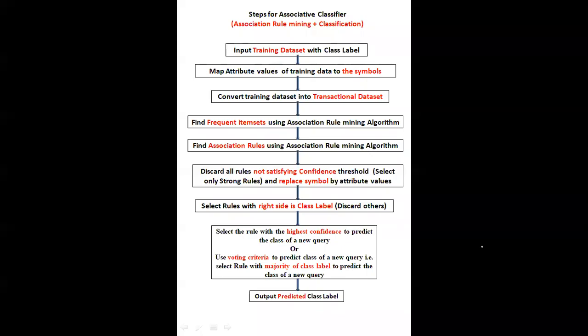Hello everyone. In this session, I will cover associative classifier. As its name indicates, it is one of the classification techniques, but it is a combination of association rule mining and classification technique. It is a hybrid approach made up from the rules of association rule mining and classification. So how it works — with an example and with steps — we will discuss here.